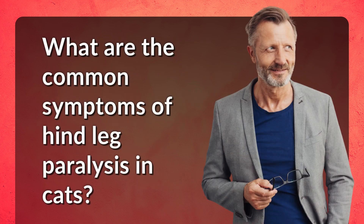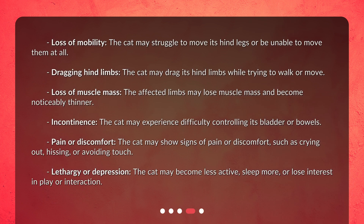Common symptoms of hind leg paralysis in cats: 1. Loss of mobility — the cat may struggle to move its hind legs or be unable to move them at all. 2. Dragging hind limbs — the cat may drag its hind limbs while trying to walk or move. 3. Loss of muscle mass — the affected limbs may lose muscle mass and become noticeably thinner.